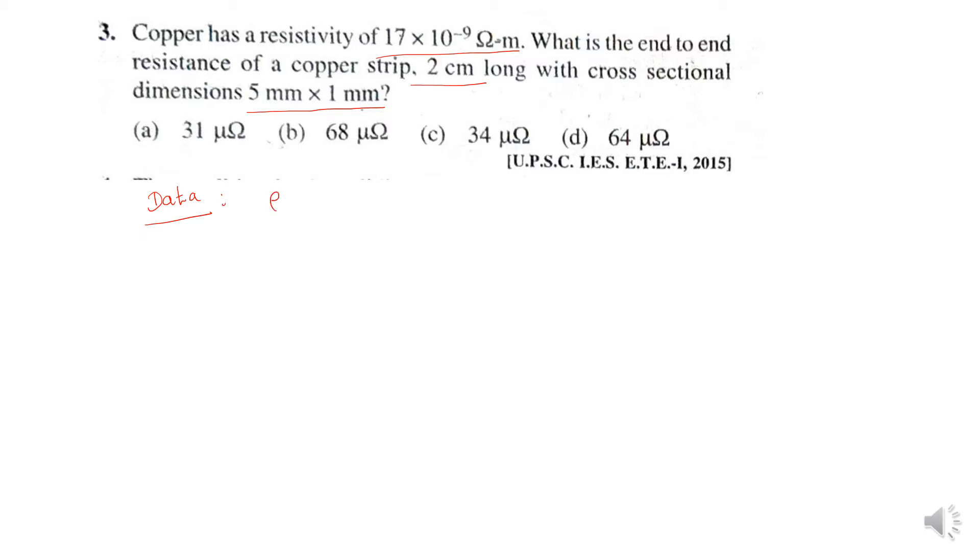Rho value is given 17 into 10 power minus 9 ohm meter. And next length is given, that is in centimeter, you have to convert the centimeter into meter: 2 into 10 power minus 2 meter. Again the cross-sectional dimension is given, that is 5 millimeter into 1 millimeter. Convert this into meter.